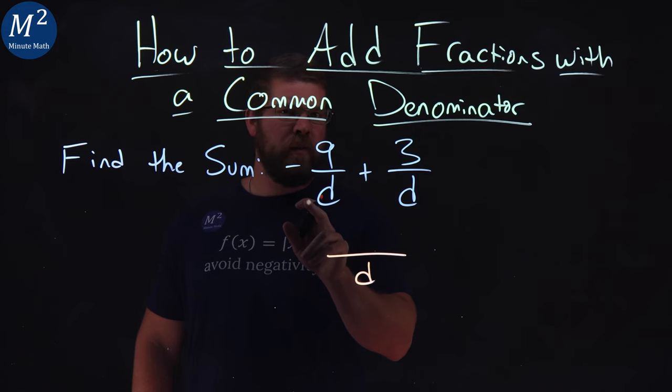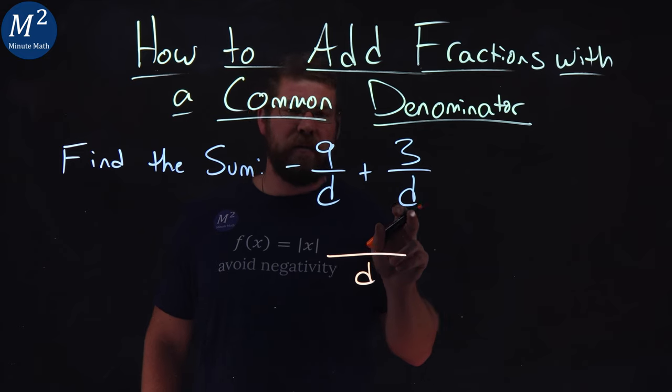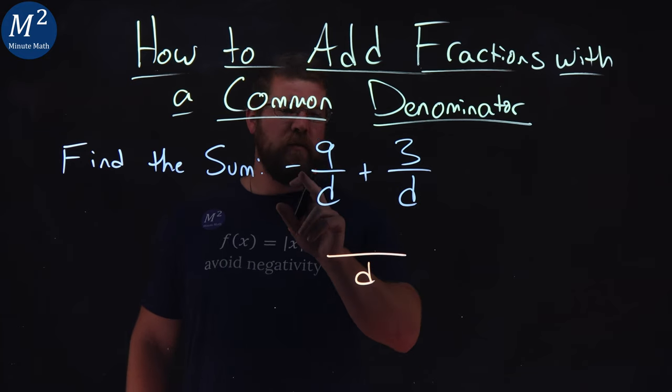If I applied it to the denominator, then we wouldn't have a common denominator. Negative d and positive d would be different denominators. So, let's leave it to the numerator.